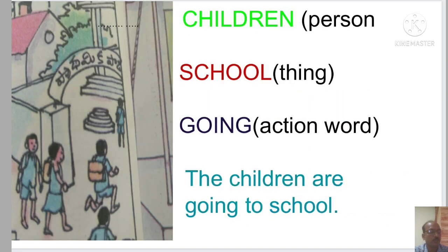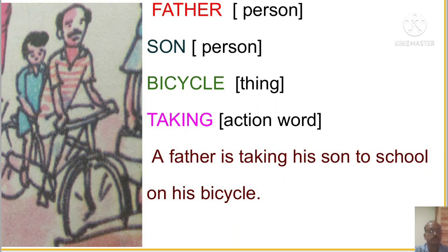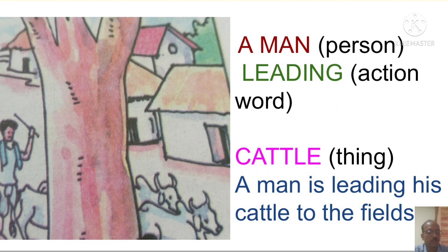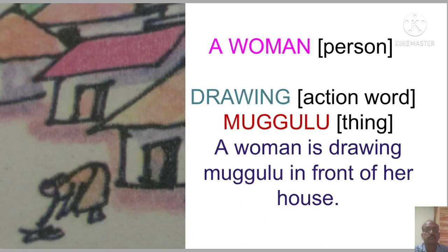The children are going to school. A father is taking his son to school, carrying him on his shoulders and his school bag in his hand. A father is taking his son to school on his bicycle. A man is leading his cattle to the fields. Two women are taking drinking water home. A woman is drawing Muggulu in front of her house.